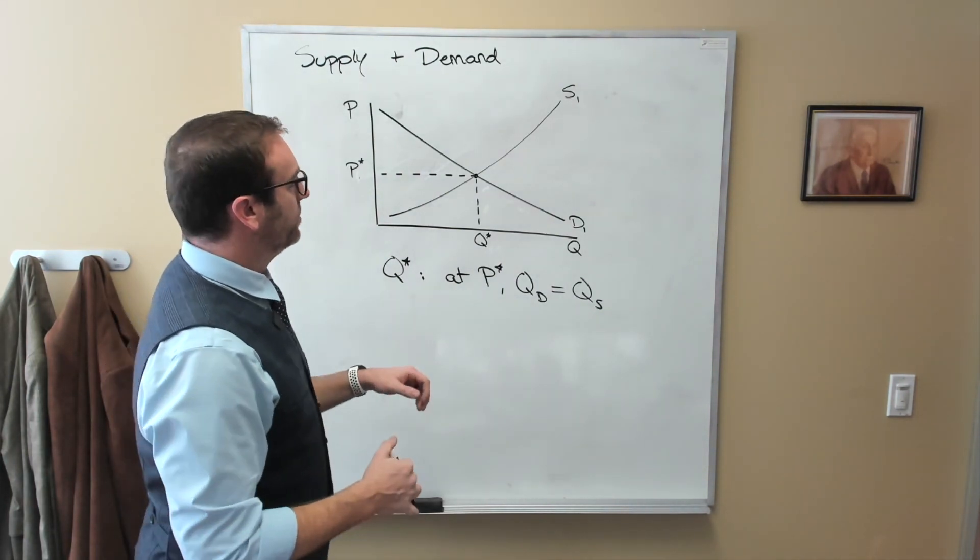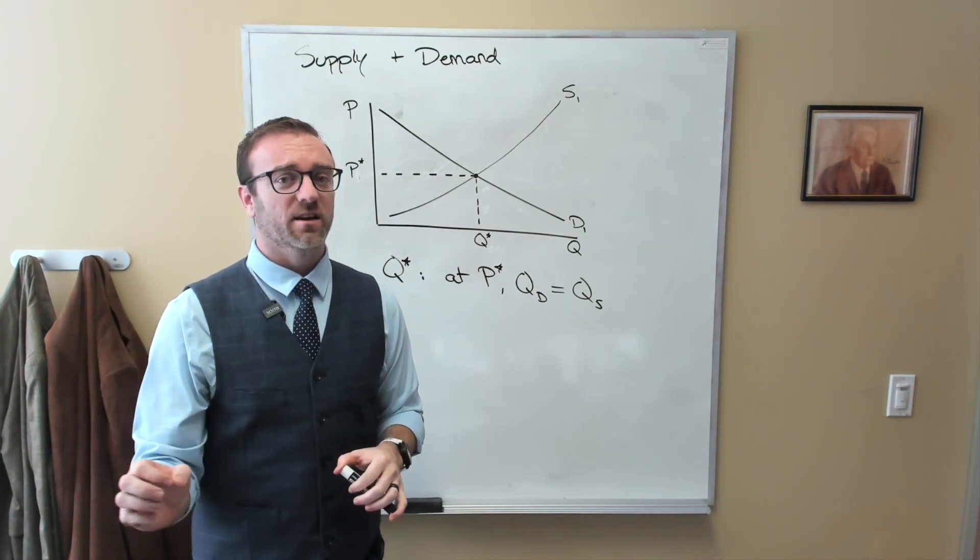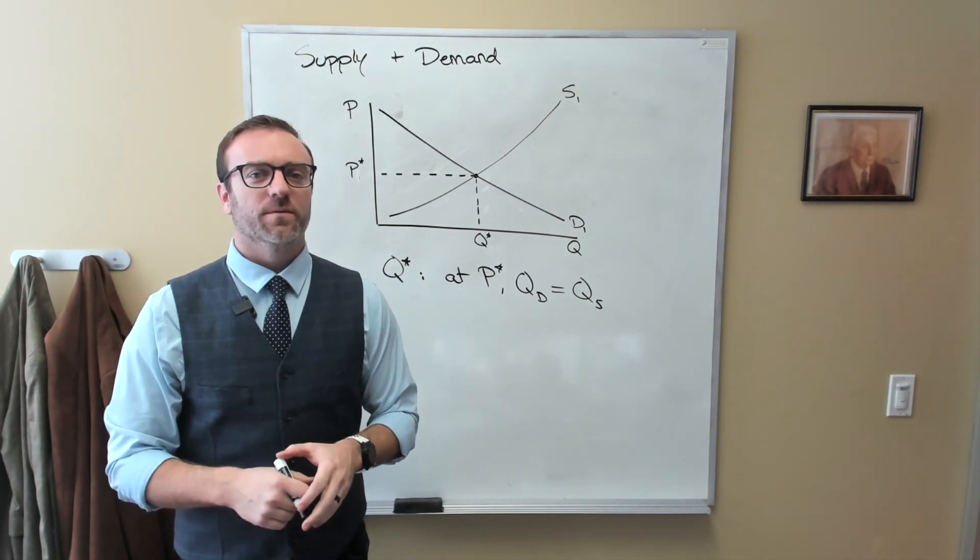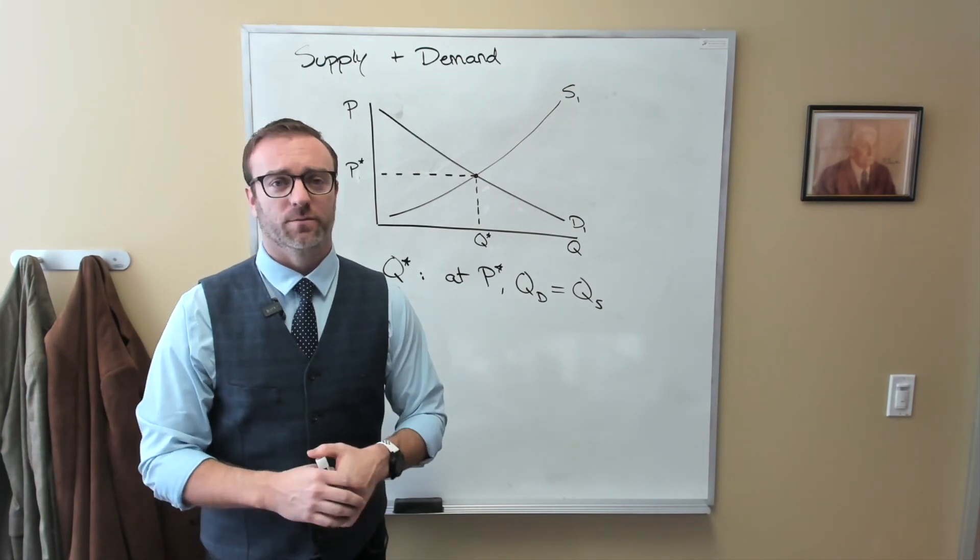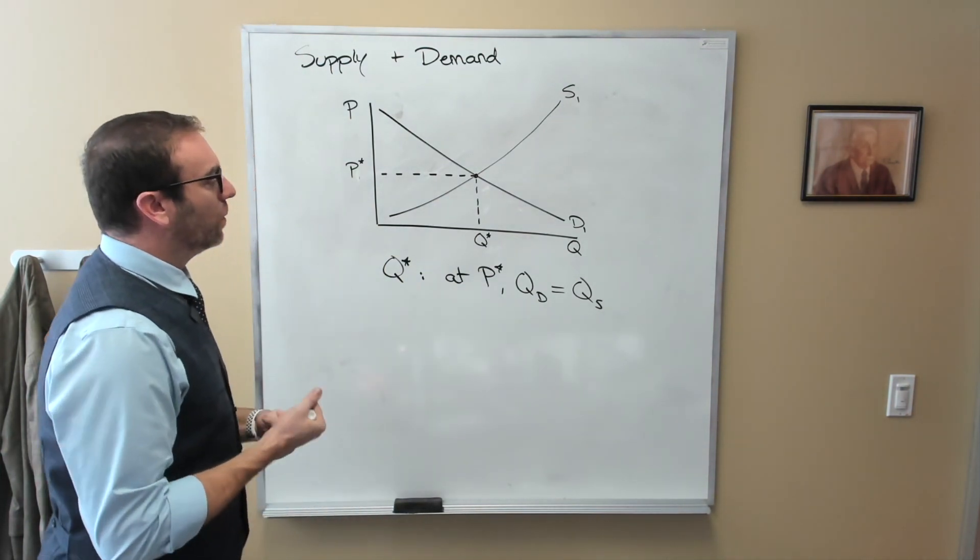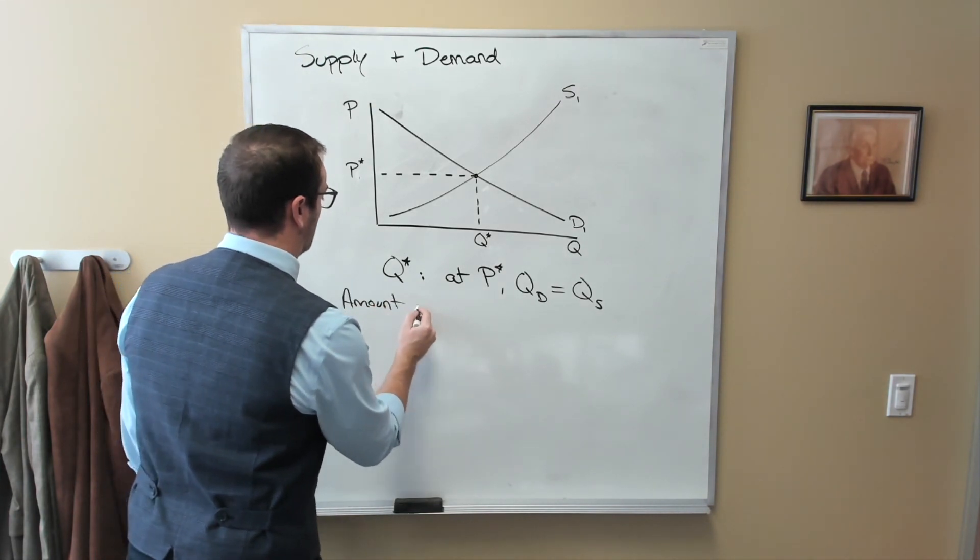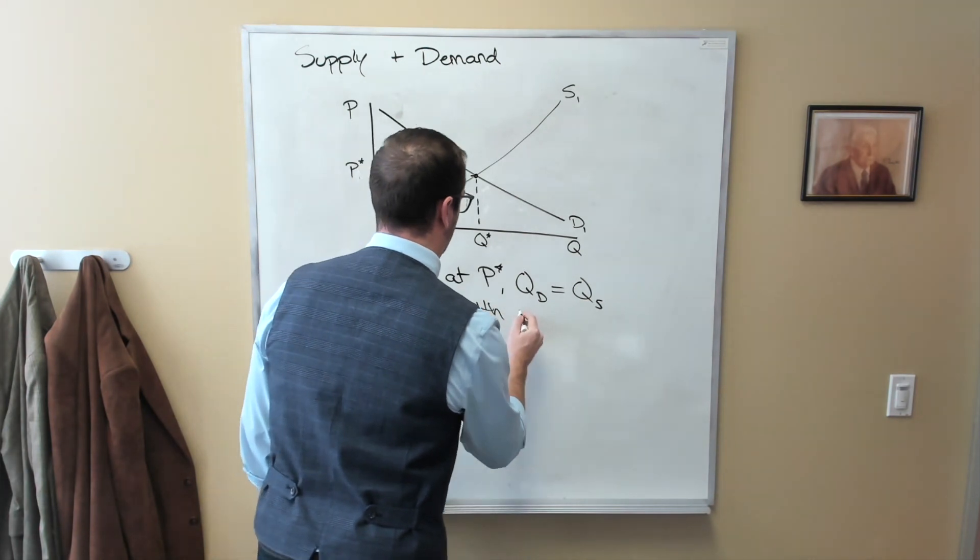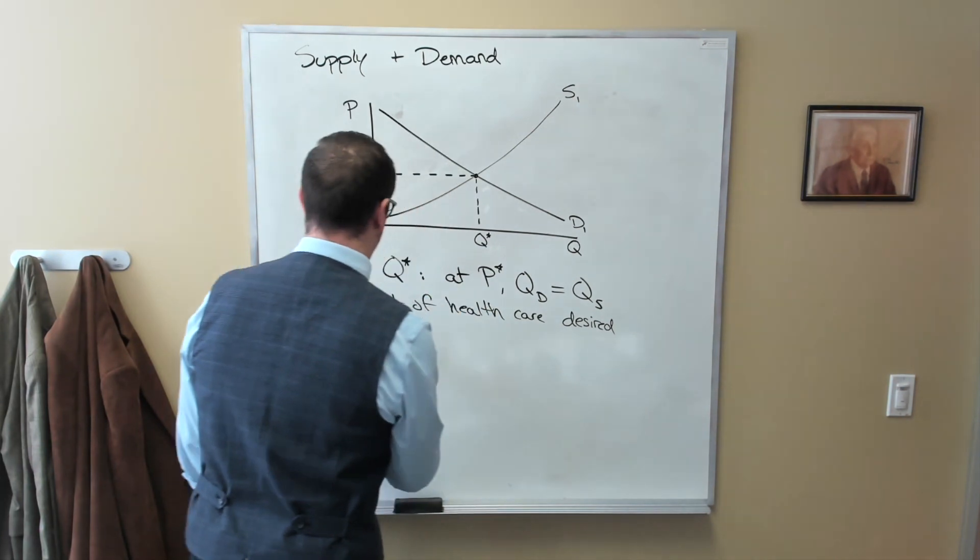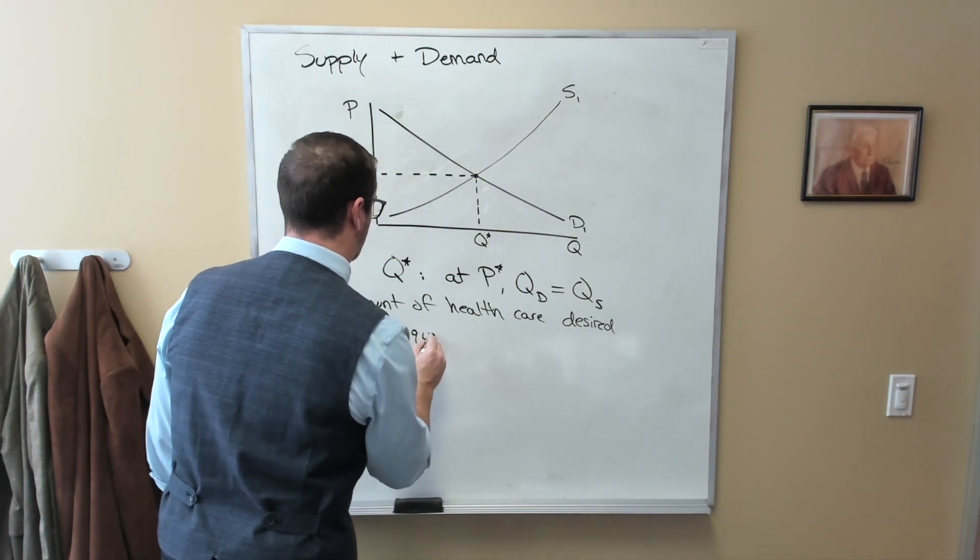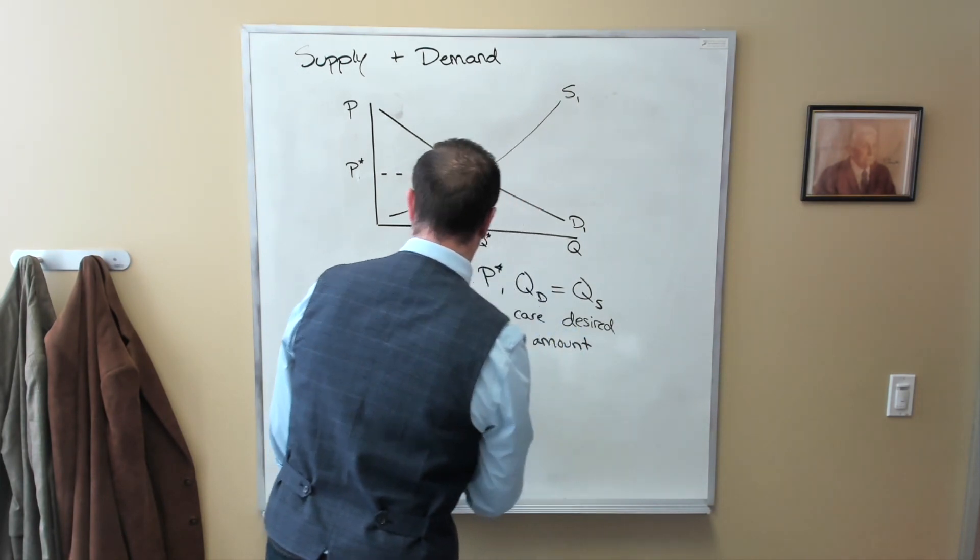So what we want to do is we want to have enough health care for everyone to have as much as they need, but also have doctors and everyone else have time to spend with their families, friends, and other loved ones. And so what we want to do is we want to ensure that the amount of health care desired is equal to the amount provided.